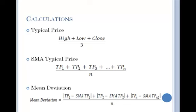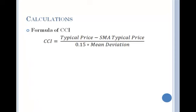Third, to calculate the mean deviation, get the absolute value of the difference between the simple moving average typical price and the typical price for each of the past 20 periods. Sum up all the absolute values and divide by 20 to get the mean deviation. The final step is to apply the values to the following formula.